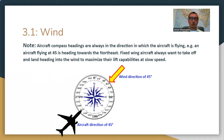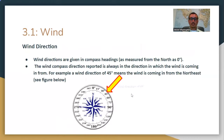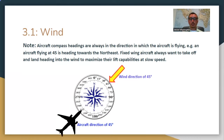Aircraft compass headings are always in the direction in which the aircraft is flying. An aircraft flying at 45 degrees is heading toward the northeast. Fixed-wing aircraft always want to take off and land heading into the wind to maximize their lift capabilities at slow speeds. Wind is based on where it's coming from; aircraft are based on where they're going.